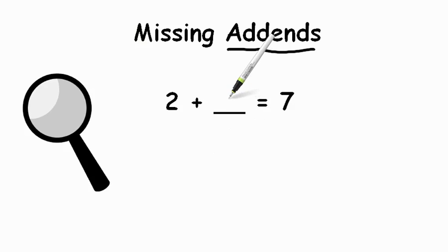So look here, we have a number that is missing. Two plus something equals seven. This is our sum, our answer. Now you notice a magnifying glass here. Think of this like a mystery and we're trying to find our mystery number.